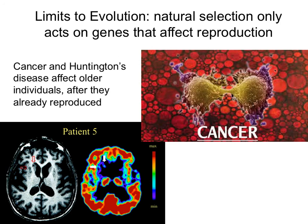So again, natural selection is only acting on genes that have an effect on reproduction. Genes that increase reproductive success will be favored. Genes that decrease reproductive success will be disfavored. But if genes have an effect on something that doesn't relate to reproductive success, then natural selection has its hands tied and cannot really do much.